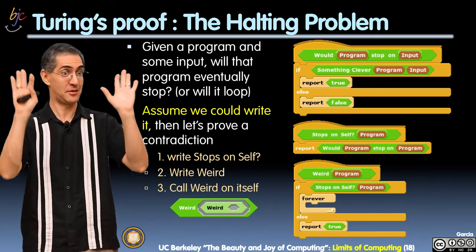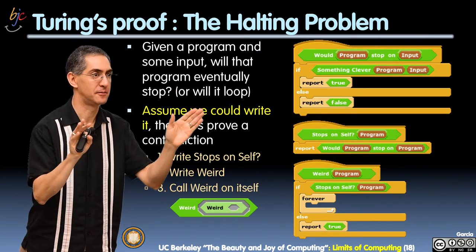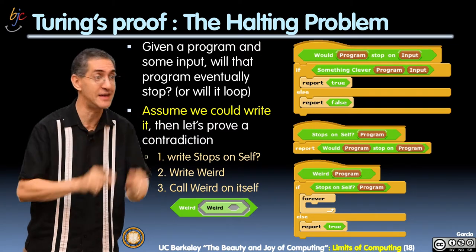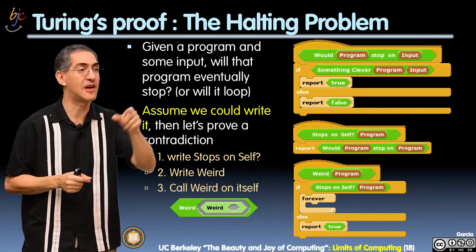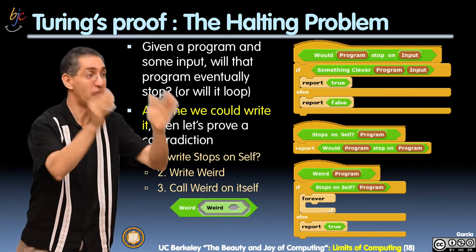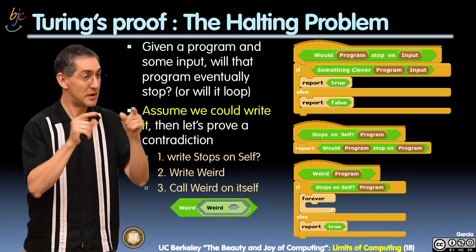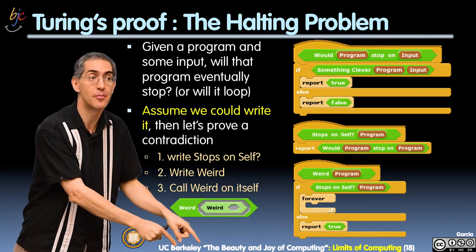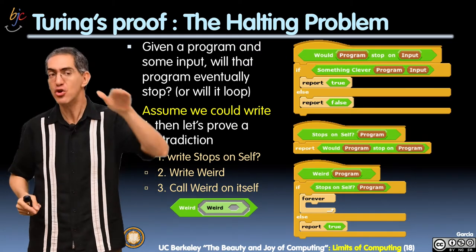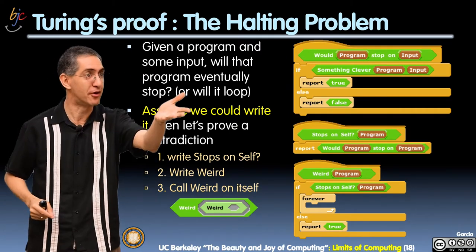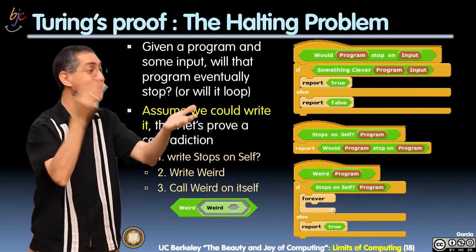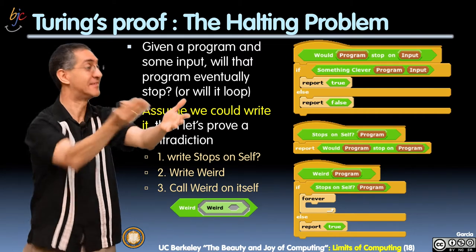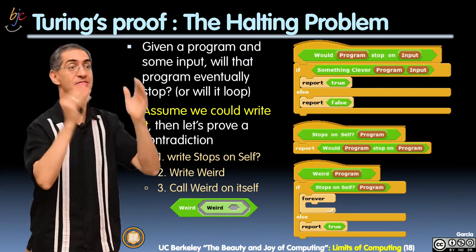This group says: stops on self is false — it would not stop on itself. So weird on weird should go forever. Watch: weird on weird — stops on self of weird, what do you say? False. So it means weird should run forever, right? But what does weird on weird actually do? It reports true — it stops. You just said it was going to not stop on itself, it would go forever. But you also just returned true and did stop. Therefore you can't both say you're going to go forever and then stop when you call weird on weird. That's impossible.